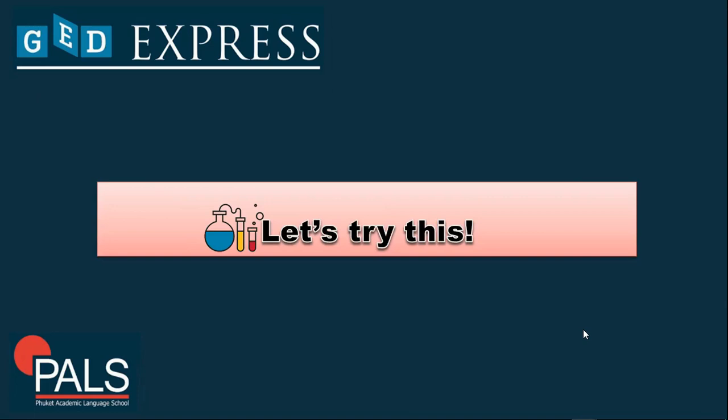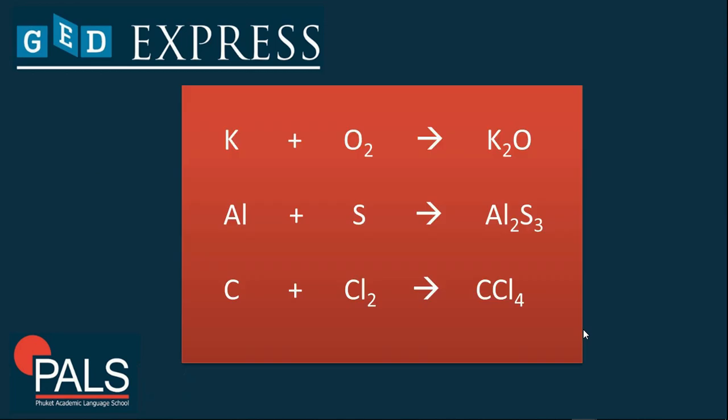Since you already have an understanding about chemical reactions involving balancing, let's try this. Can you try balancing it? In this case, how many potassium can you see? There is only one, and there are two oxygen, but on this side you have two potassium and only one oxygen. So the equation is unbalanced.